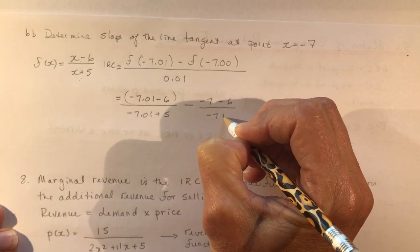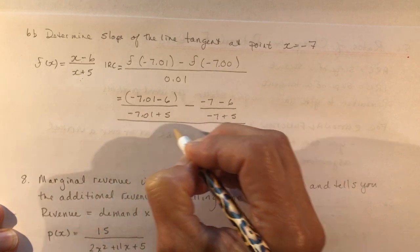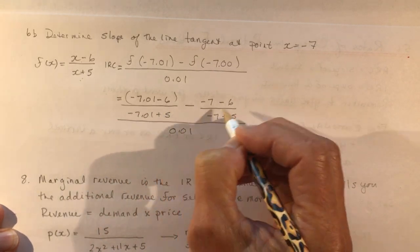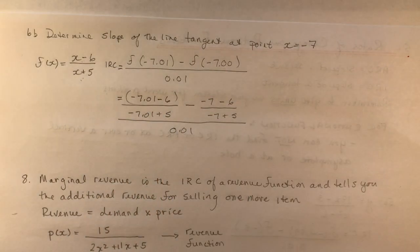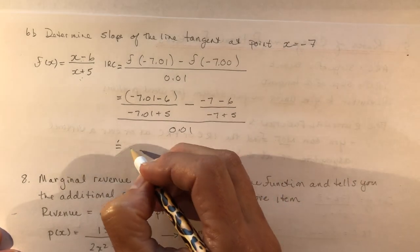And then minus, minus 7, minus 6, over minus 7, plus 5, and this whole thing, again, is over 0.01. So you want to do the calculations in the top here, followed by the calculation in the bottom, and I get approximately minus 2.74.